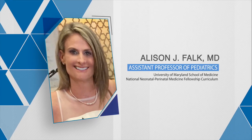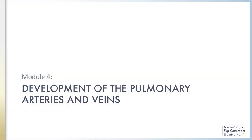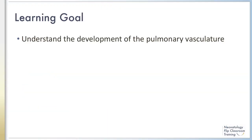Module 4 will focus on the development of the pulmonary arteries and veins. By the end of the fourth module, the learner will understand the development of the pulmonary arteries and veins and how the timing of this development coincides with lung development.